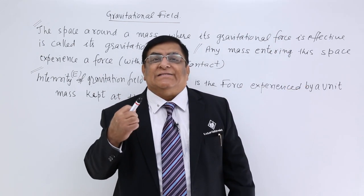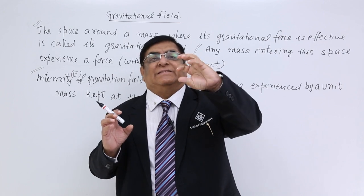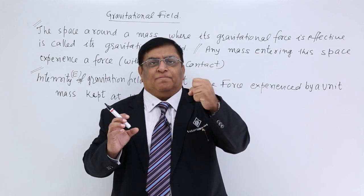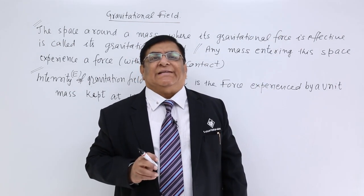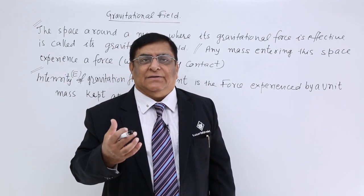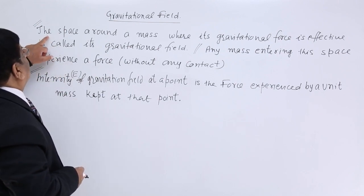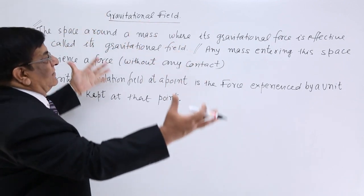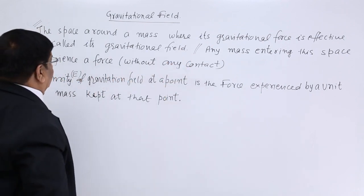How do we measure intensity of field? Intensity of field is measured by the force being experienced by a test mass. We call it a test mass because for us it is testing how strong the field is at this point, this point, or this point. That is the intensity of the field. Gravitation is a force which can be applied through a field, so it is a field force. The space around a mass where its gravitational force is effective is called the gravitational field. Any mass entering this space experiences a force, even without any contact.